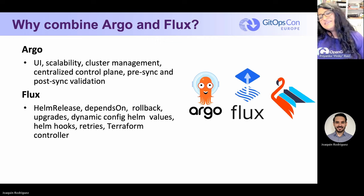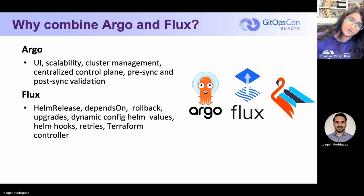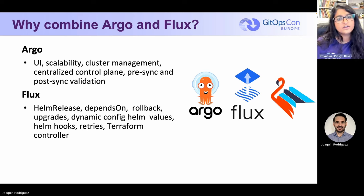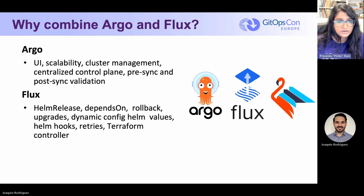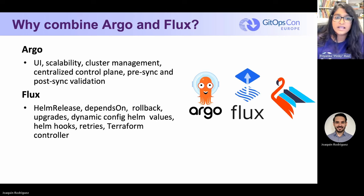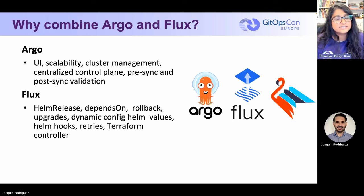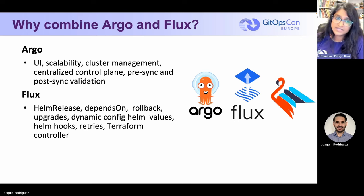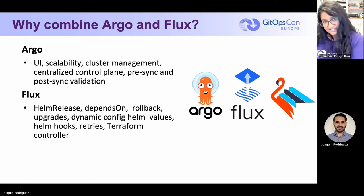Why combine Argo and Flux? Argo has a really awesome UI, great scalability and cluster management, a centralized control plane, and pre-sync and post-sync validations built in. Flux, on the other hand, has Helm release, depends-on rollback, upgrades, dynamic config, Helm values, Helm hooks, retries, and the Terraform controller. The biggest reasons people want to use Flamingo is to take advantage of Flux's Helm controller and the Terraform controller.